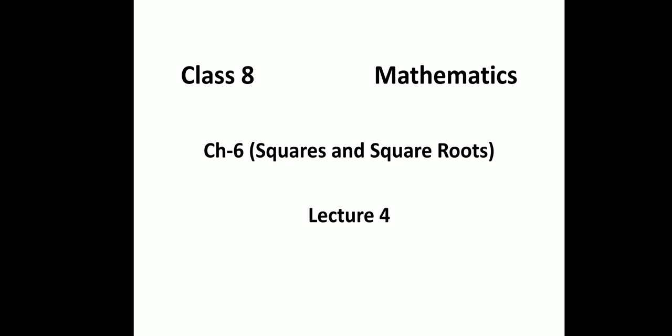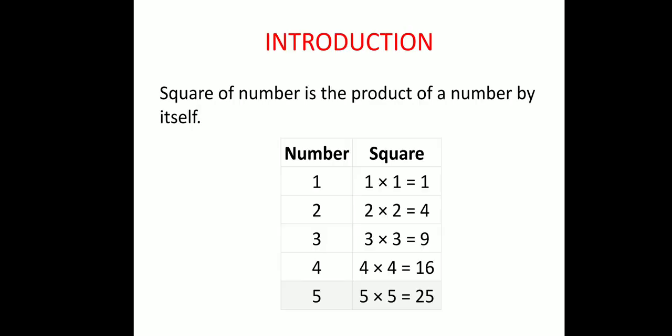As the name indicates, squares — in your previous classes, you must have learnt that the area of a square is equal to side into side, that is side squared. So we can say that the square of a number is the product of a number by itself. For example, if I take number 1, its square will be 1 into 1, that is 1. The square of 2 is 2 into 2, that is 4. The square of 3 is 3 into 3, that is 9. Similarly, you can find out the square of all the numbers.